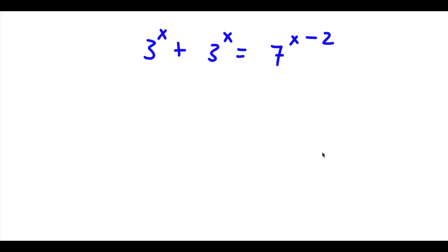Hey guys, welcome back to Click Academics. In today's video I'm going to teach you guys how to solve this exponential equation, and make sure to stick on to the end of this problem where I have two more bonus problems which you guys can try to solve. So I have 3 to the power of x plus 3 to the power of x is equal to 7 to the power of x minus 2.